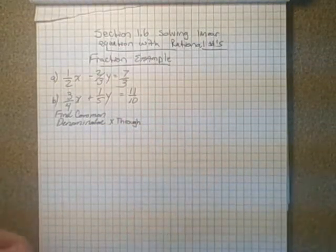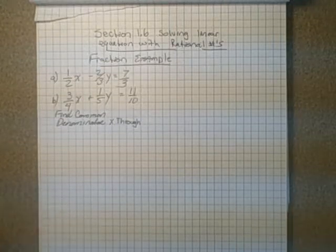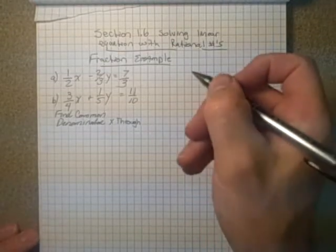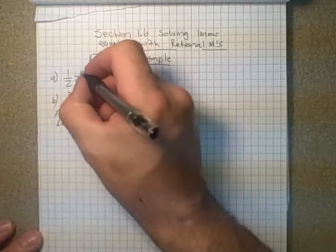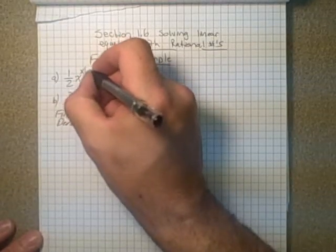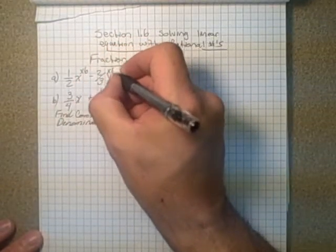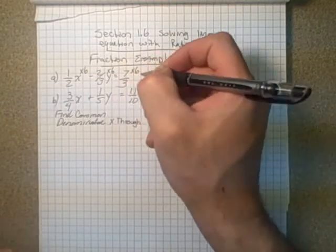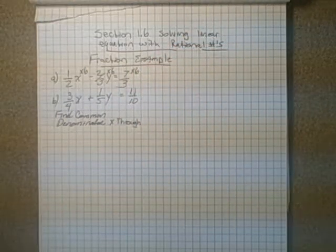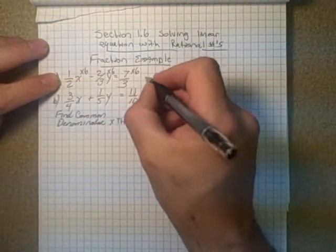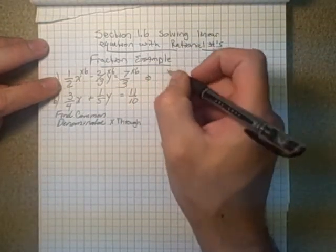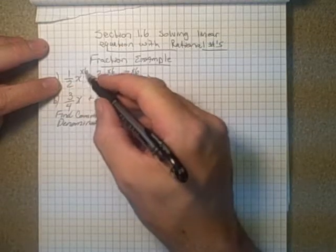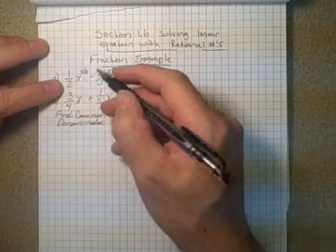And you have to make sure you multiply through in each expression. So the common denominator for this one would be 6. So I want to multiply by 6 right through here.